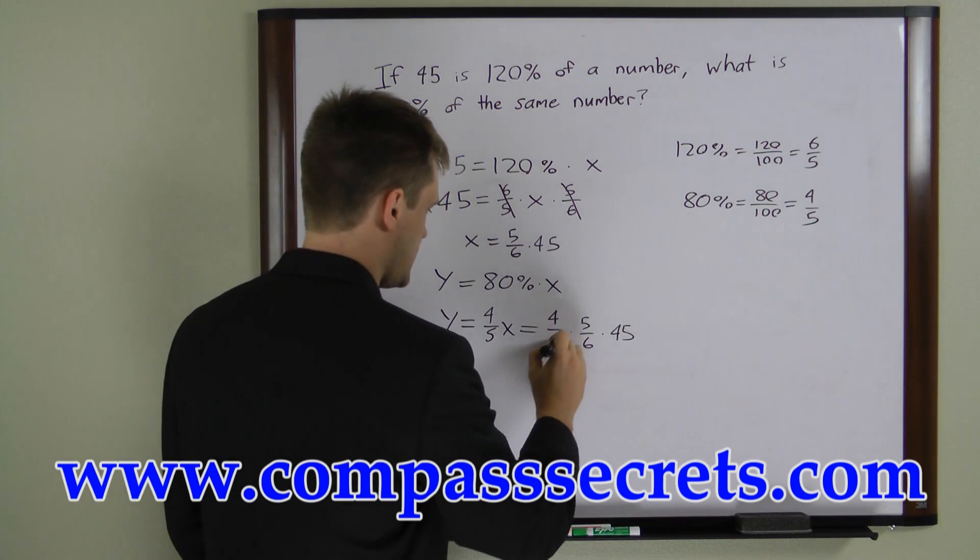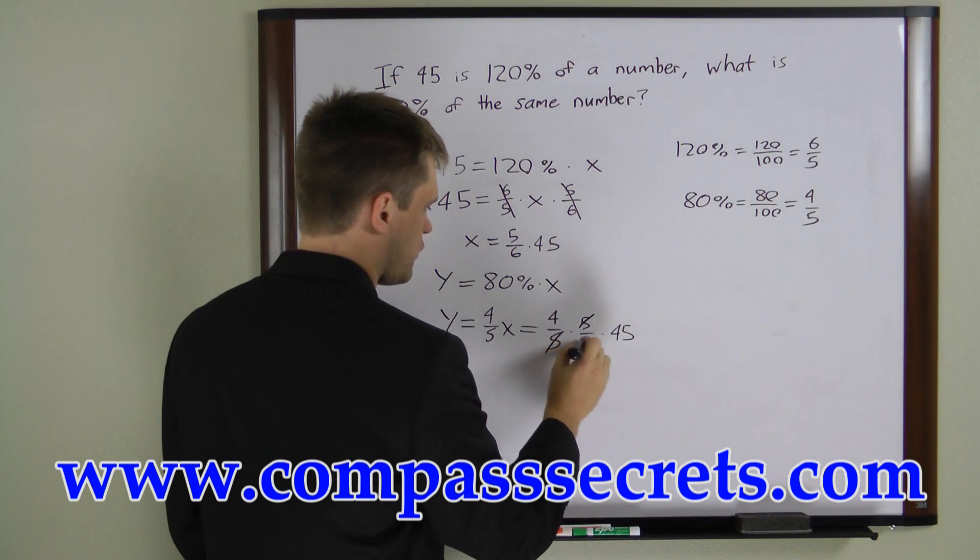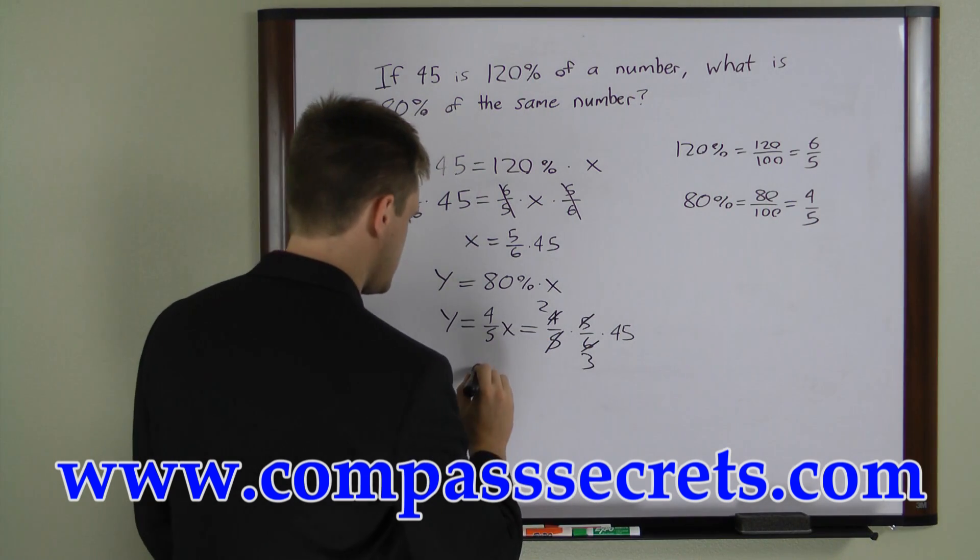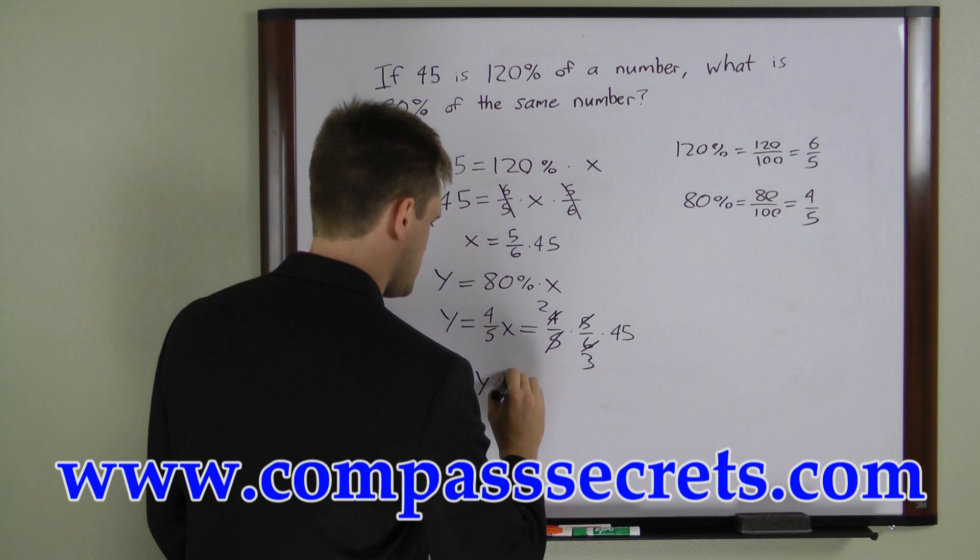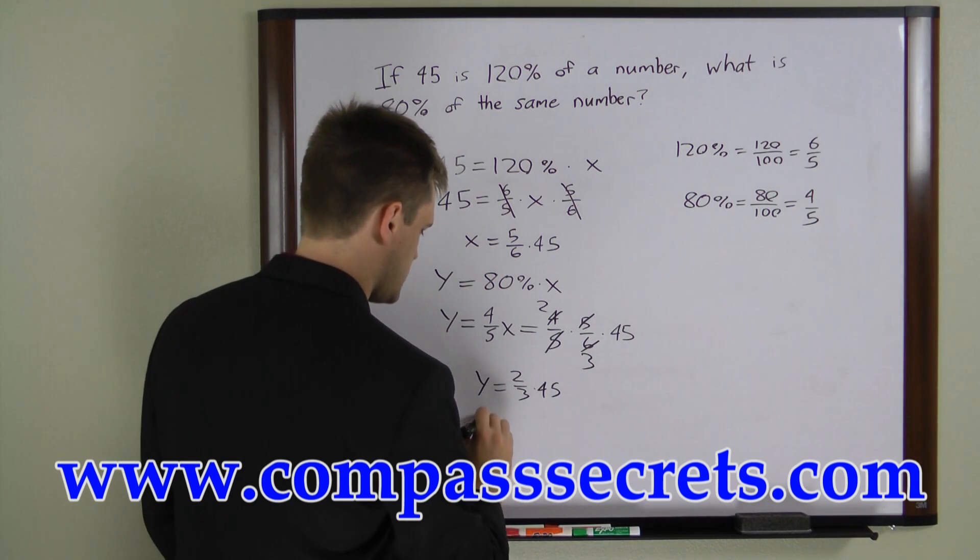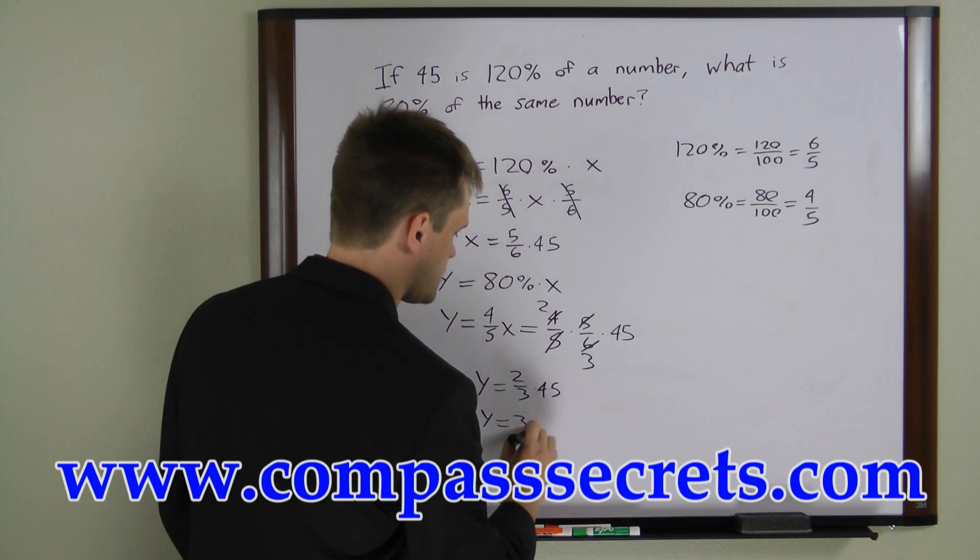Now we can cancel out these 5's, and the 4 over 6 is the same as 2 over 3, so we can rewrite this as y equals 2 thirds times 45, which is the same as y equals 30.